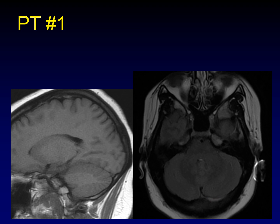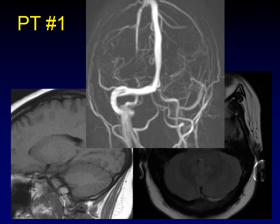We've got the patient on the table — let's get an MRV. There's absolutely no discernible flow in that left transverse sinus. This looks like a dural venous thrombosis.